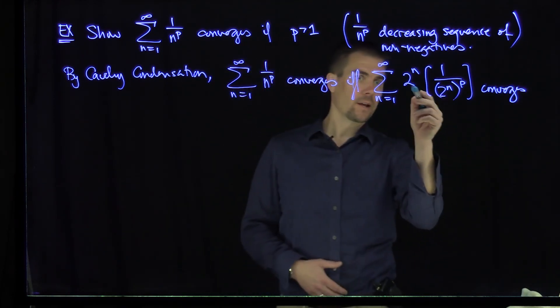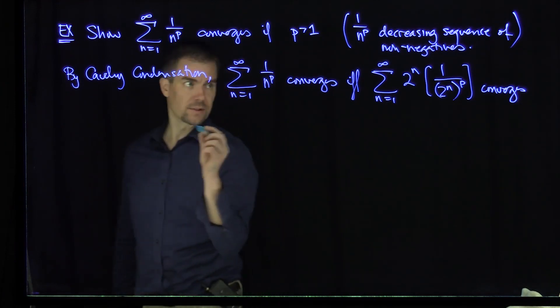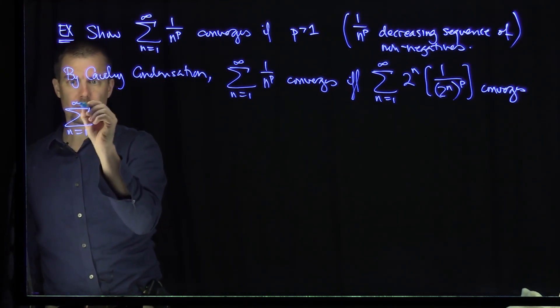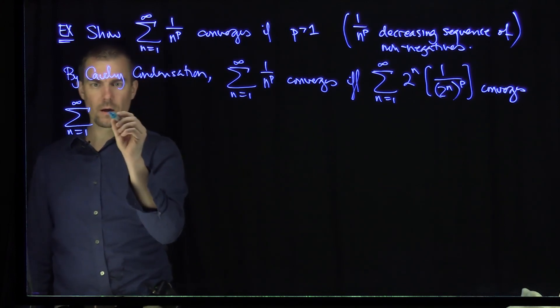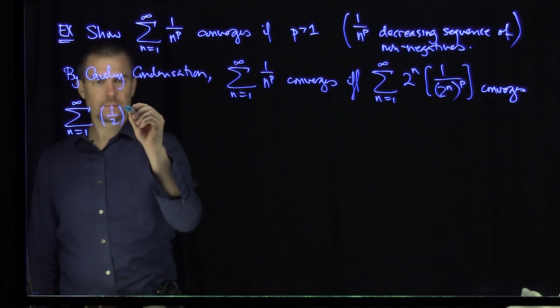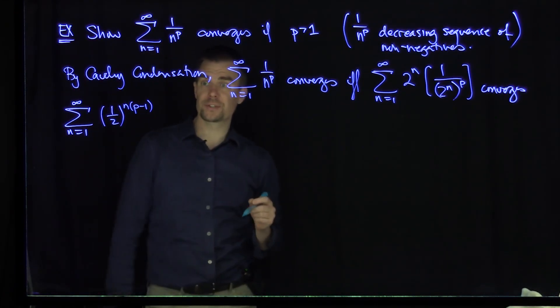Now we see that this is going to be exactly, I have a 2 to the n times p minus 1, right? So this is exactly the series n goes from 1 to infinity of 1 half to the n to the p minus 1. That's going to be our series.